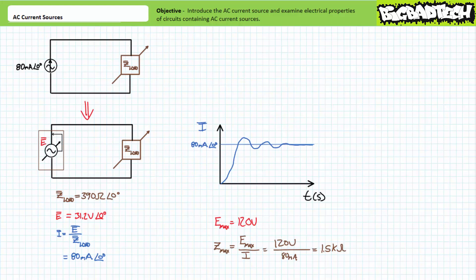That's about it for our introduction to AC current sources. We'll be making use of AC current sources in later circuit analysis scenarios, as well as making use of a handy equivalency between AC current sources and AC voltage sources called source conversion. In conclusion, this lecture introduced the AC current source; we learned to perform circuit analysis using AC current sources and discussed considerations regarding AC current sources placed in series and in parallel.